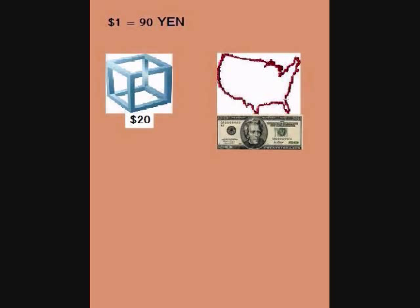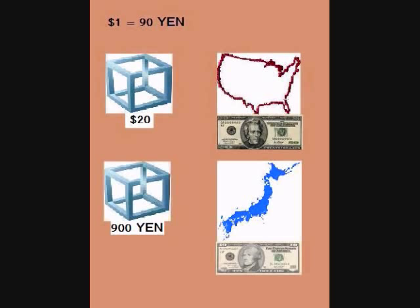Let's look at a specific example. Let's say the exchange rate from yen to dollars is 90 yen per dollar, and a widget costs $20 in the US but in Japan it costs 900 yen. This means in US dollars the widget costs $20 in the US but only $10 in Japan.